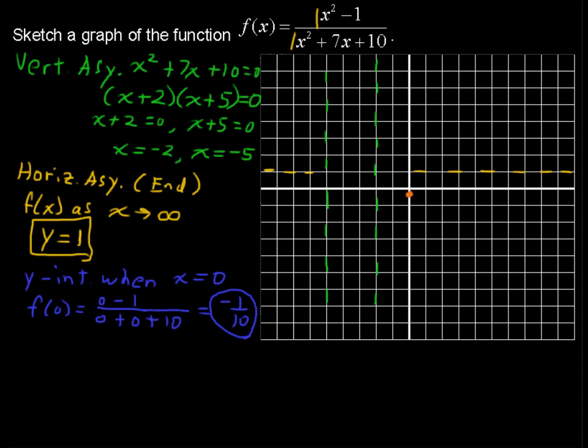Now we look for x-intercepts. x-intercepts are when the function equals 0, so that is when x squared minus 1 equals 0. Note that I didn't pay attention to the denominator because as long as the numerator is 0, that's the only way you're going to get the function to equal 0.